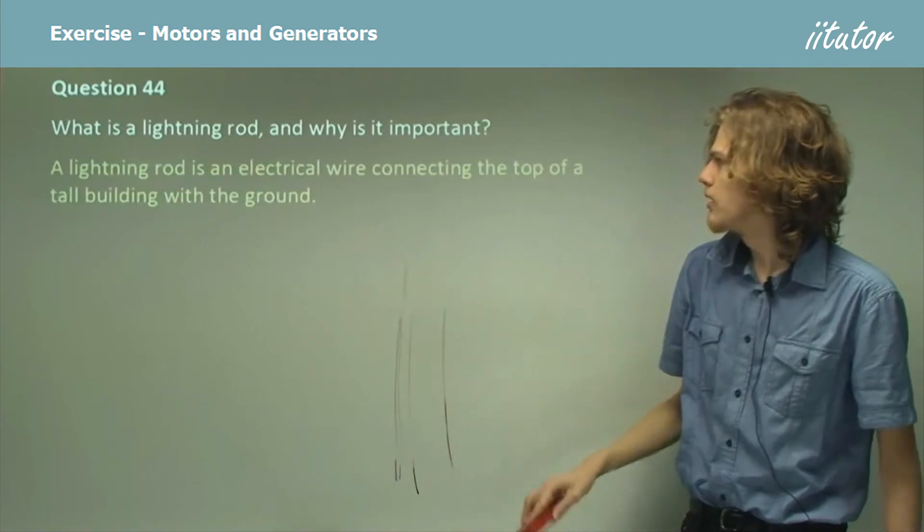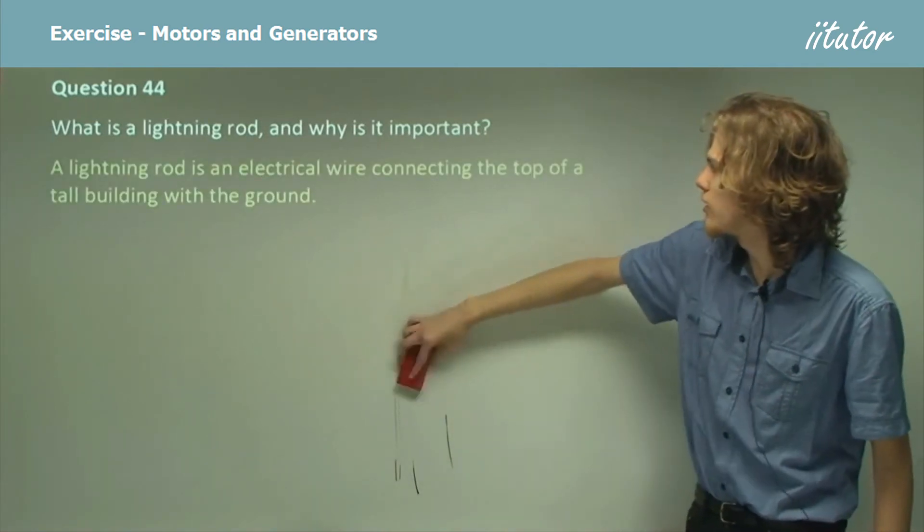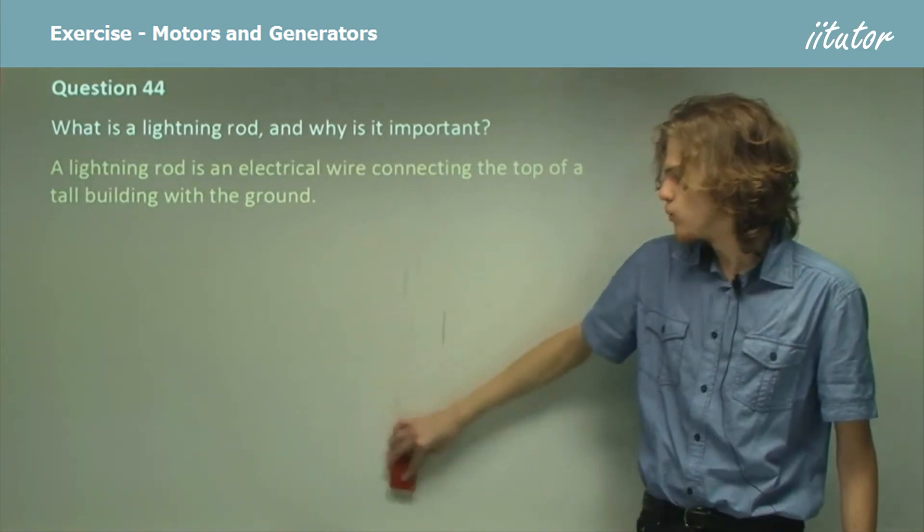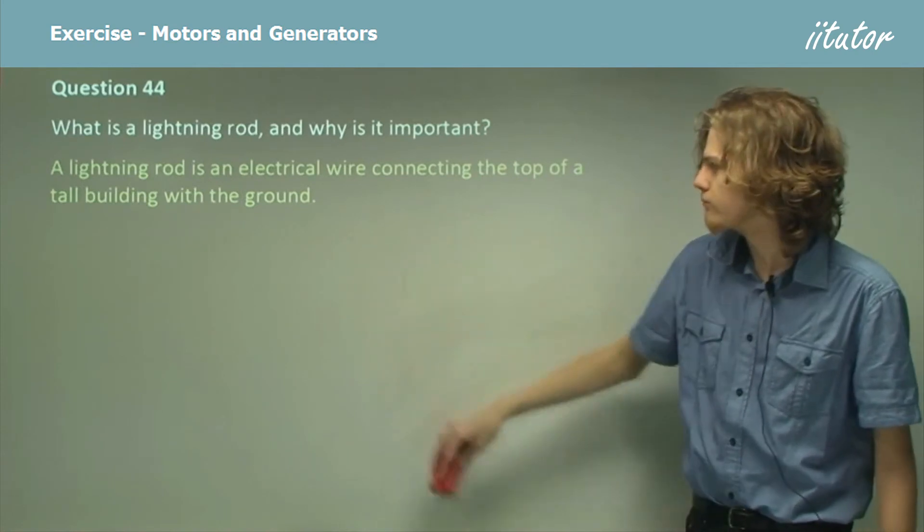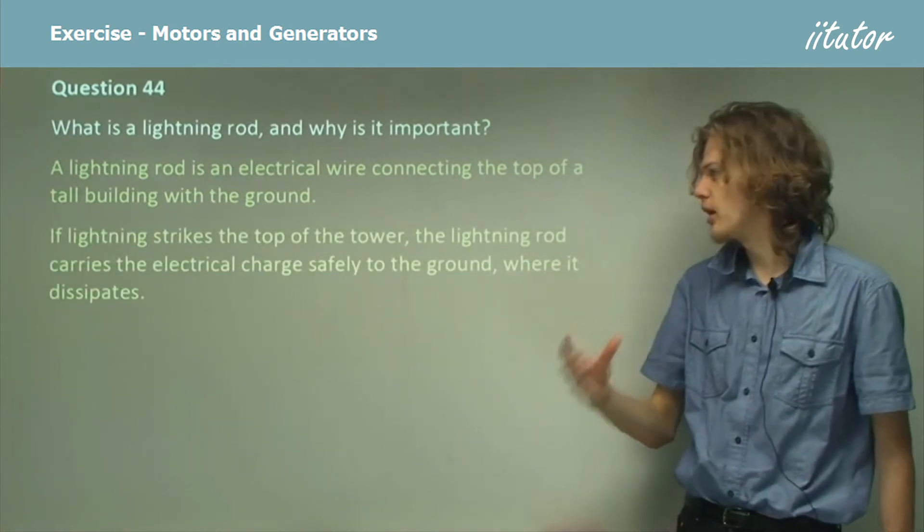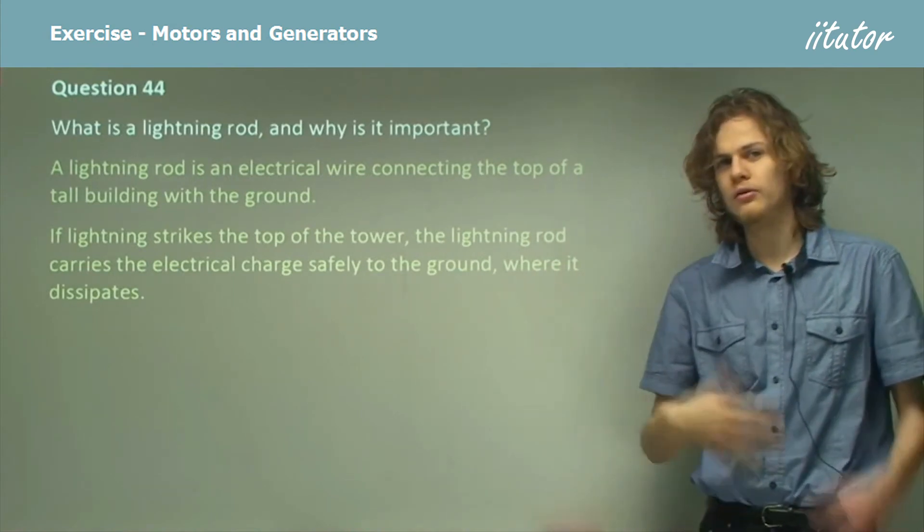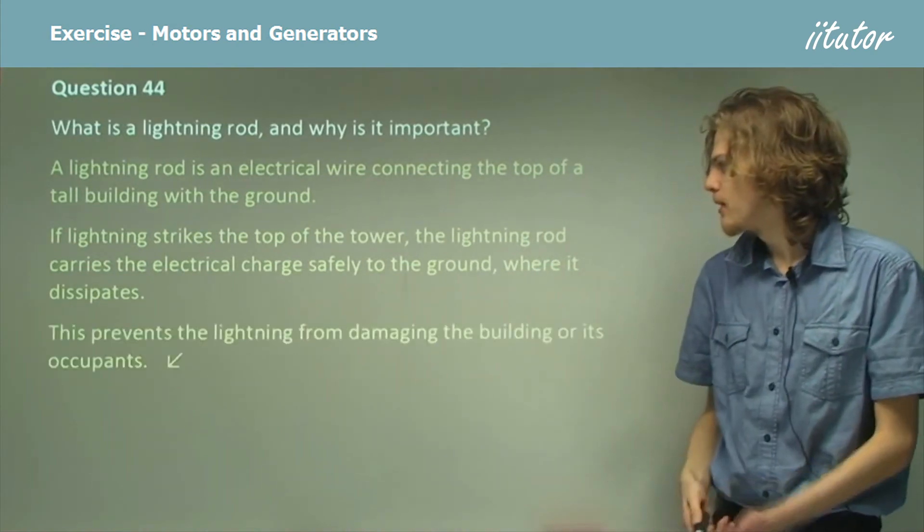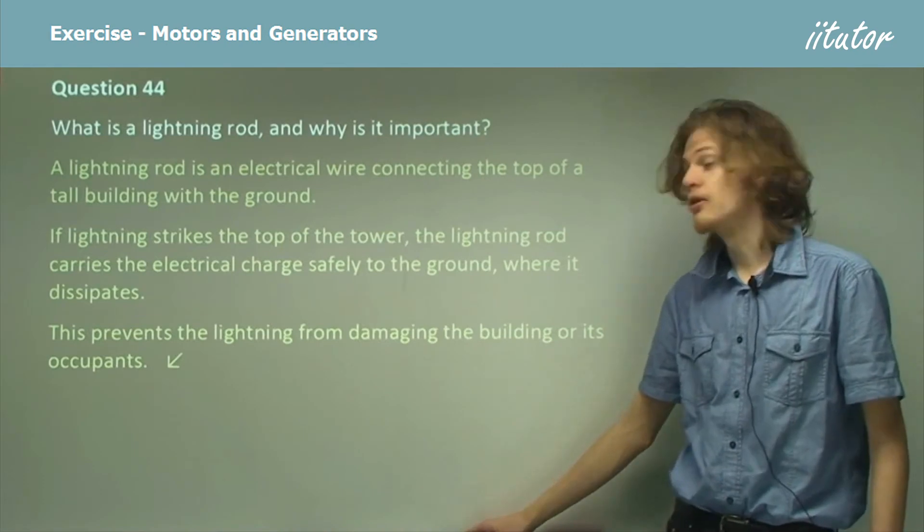So we can write down that a lightning rod is an electrical wire connecting the top of a tall building with the ground. If lightning strikes the top of the tower, the lightning rod carries the electrical charge all the way down to the ground where it dissipates. This prevents the lightning from damaging the building or its occupants.